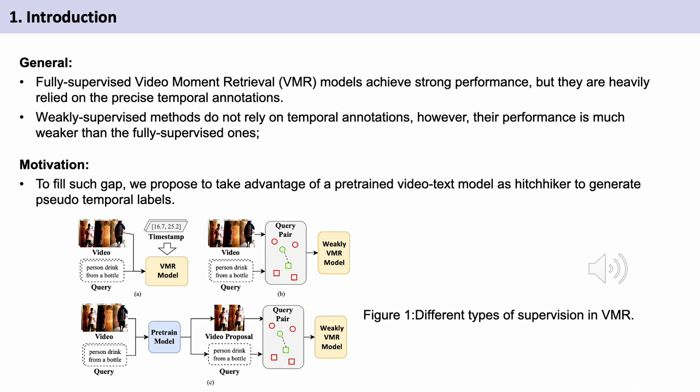The figure below shows current fully supervised VMR methods rely on the precise annotation of start and end time stamps. Most weakly supervised VMR methods are following the multiple instance learning, MIL, pipeline, which treats paired video text as positive samples. Green circles and squares represent paired video and text, unpaired video and text, red circles and squares, as negative samples.